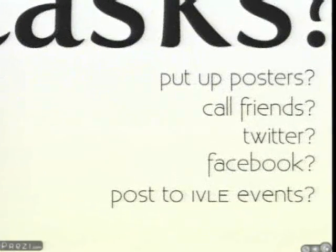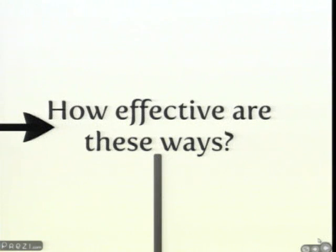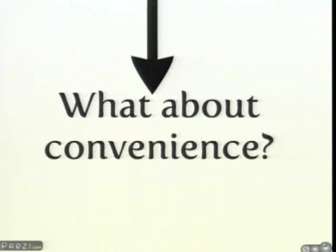Aren't these the usual avenues that we use — Facebook, Twitter, phone call? We have to ask ourselves: how effective are these avenues? With Twitter and Facebook, you can only reach out to those in your friend list, not the entire NUS community. And what about posters — is everyone going to look at your posters? How convenient are these ways? Are you going to go around putting posters everywhere in NUS, or call your friends one by one?